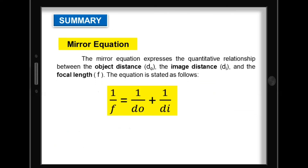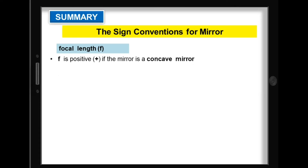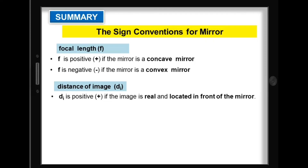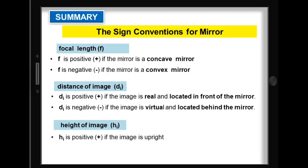To summarize: the mirror equation expresses the quantitative relationship between object distance, image distance, and focal length. The sign conventions for mirrors are: focal length is positive for concave/converging mirrors and negative for convex/diverging mirrors. Distance of image is positive if real and in front; negative if virtual and behind. Height of image is positive if upright; negative if inverted.